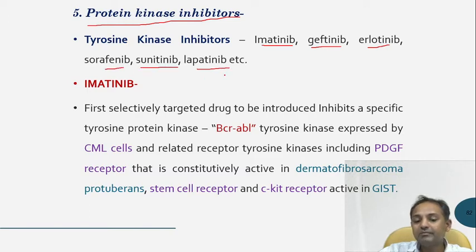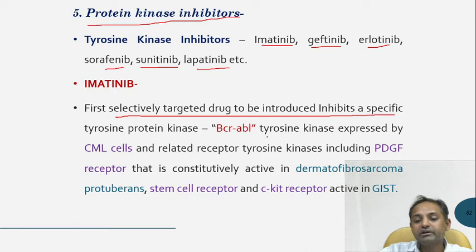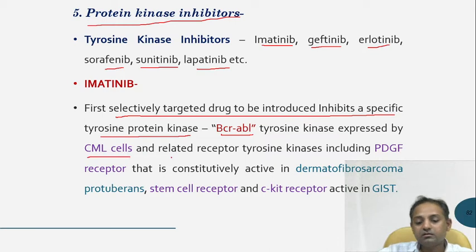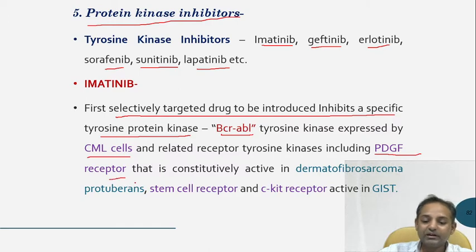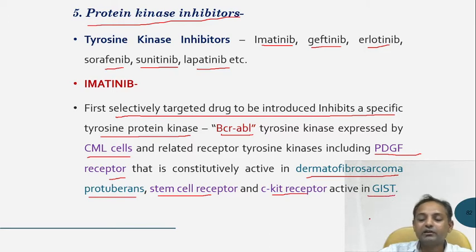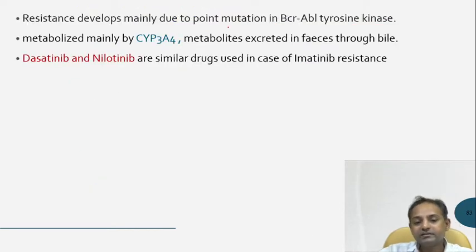sunitinib, and lapatinib, etc. It is the first selectively targeted drug introduced to inhibit the specific BCR-ABL tyrosine protein kinase expressed by CML cells, and related receptor tyrosine kinases including the platelet-derived growth factor receptor, constitutively active in dermatofibrosarcoma protuberance, and the C-kit receptor which is active in GIST — gastrointestinal stromal tumor.